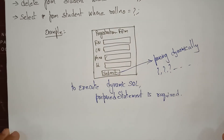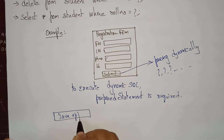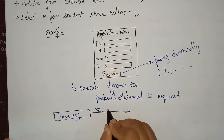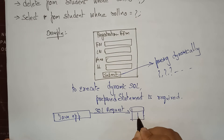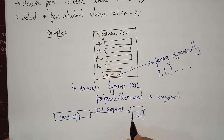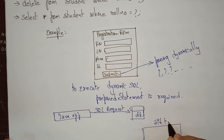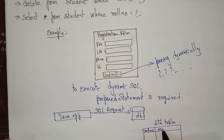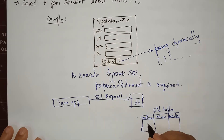So what is this PreparedStatement? A Java application is requesting an SQL query from the database, and the database has to give a response back to the Java application. The student table contains the columns: role number, name, and marks.